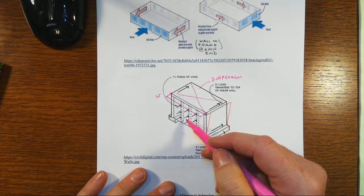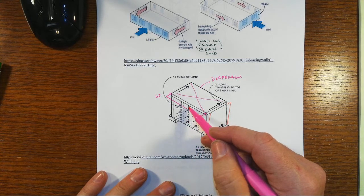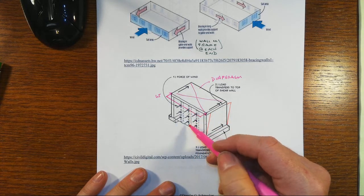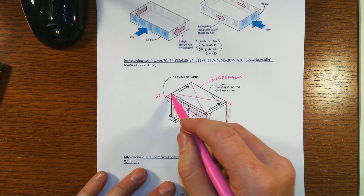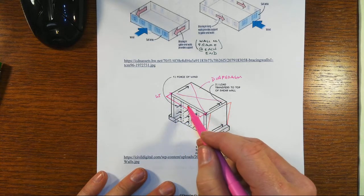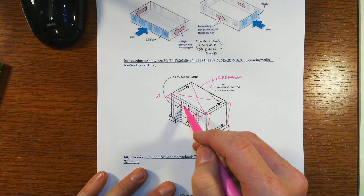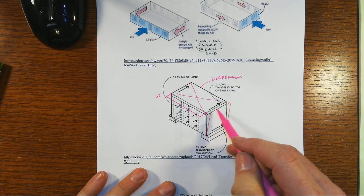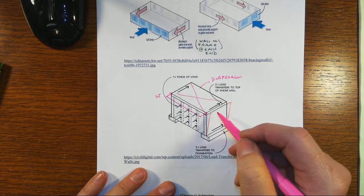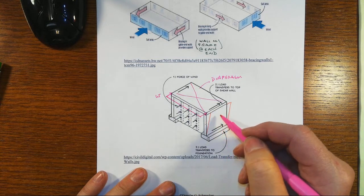And then that diaphragm acts as a simply supported beam that takes its effects over to the vertical resisting element. So notice, we start with lateral pressures onto a vertical beam that splits the load vertically and then we have a simply supported diaphragm that will take the load and transfer horizontally over to the shear wall.